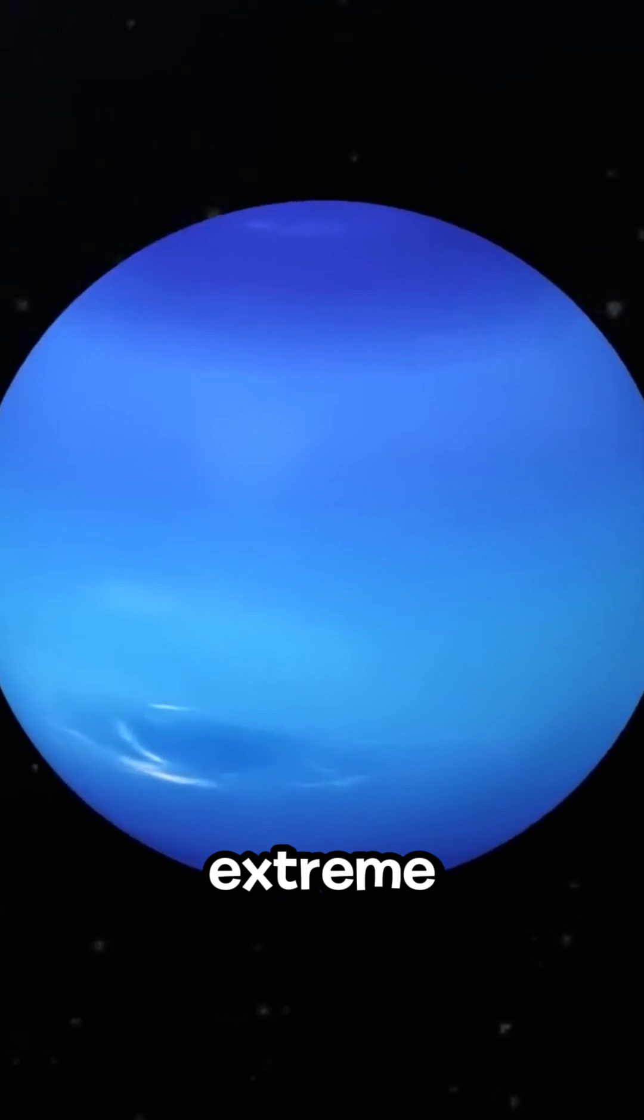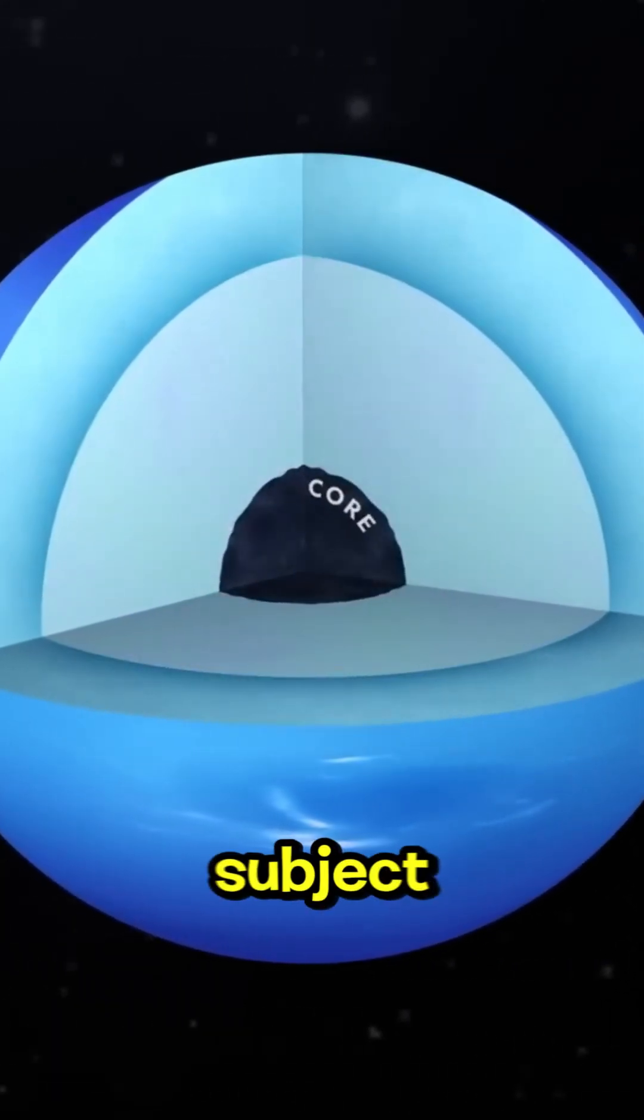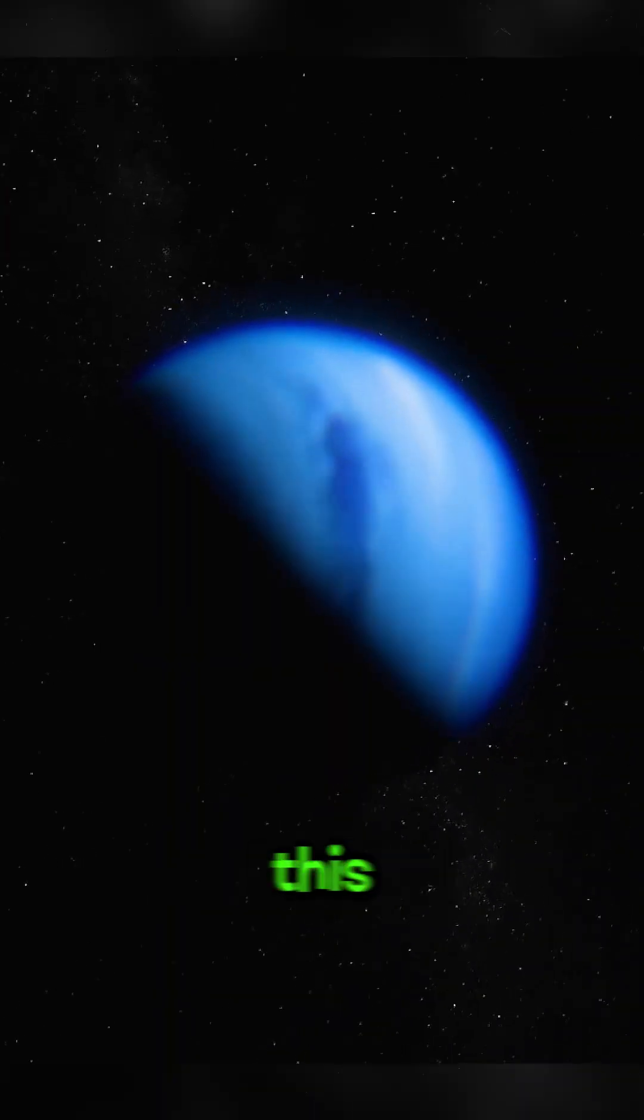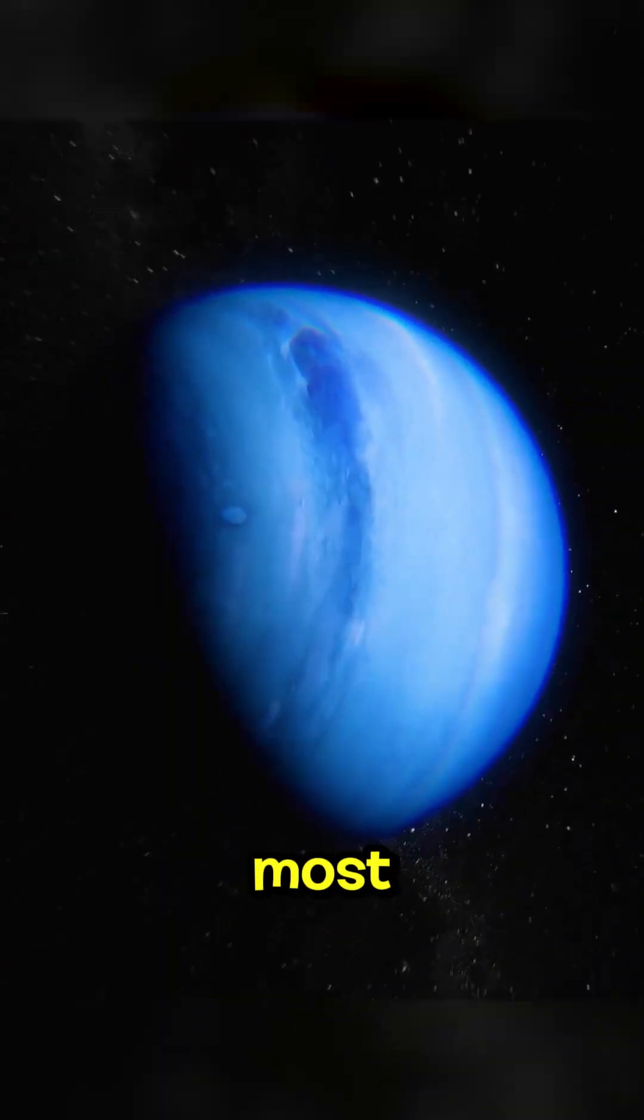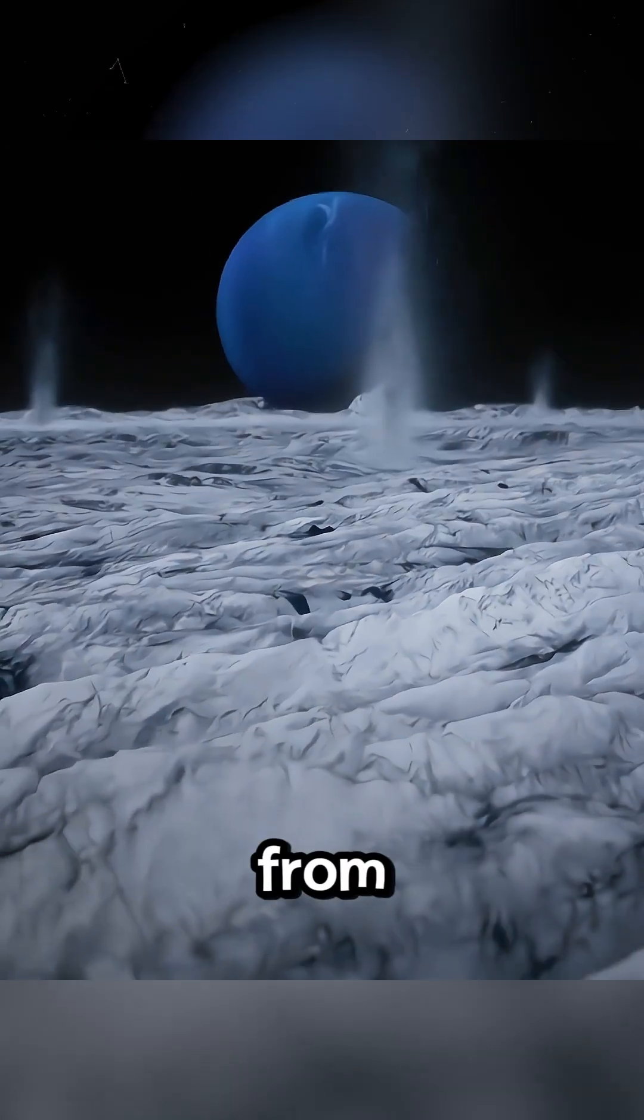The causes of Neptune's high-speed winds are still a subject of scientific investigation, but several factors likely contribute to this phenomenon. One of the most important factors is Neptune's internal heat. Despite its frigid surface temperatures, the planet emits more heat than it receives from the Sun.